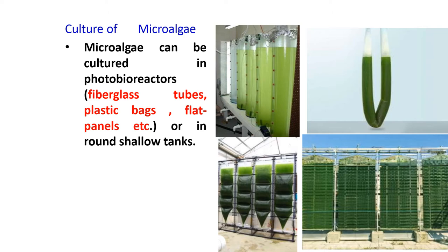There are different types of photobioreactors. These devices provide a protective environment for the cultivated species, and the culture parameters such as pH, oxygen, carbon dioxide concentration, and temperature are controlled. As it is a closed system, we have to supply all nutrients including carbon dioxide.